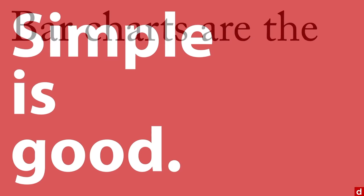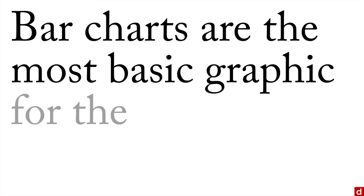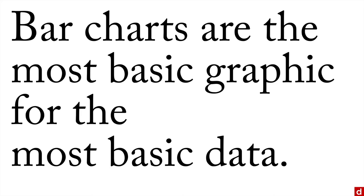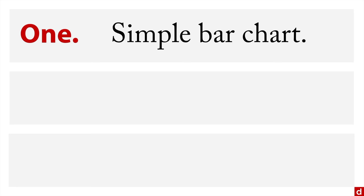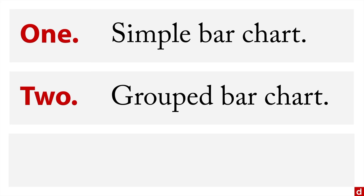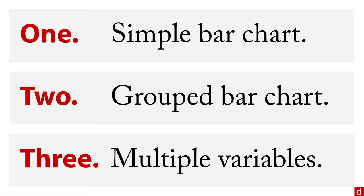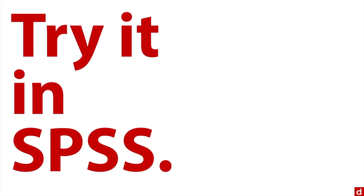The next step is to look at bar charts. We like bar charts for a very simple reason: they're simple, and simple is good. More specifically, bar charts are the most basic graphic for the most basic data — just frequencies for a simple category. It's also a very basic command in SPSS. We have a few options: a simple bar chart showing category frequencies for a single variable; a grouped bar chart that breaks it down by another variable; and multiple variables showing bars simultaneously. Let's try it in SPSS. Just open up the SPSS syntax file and we'll give it a whirl.